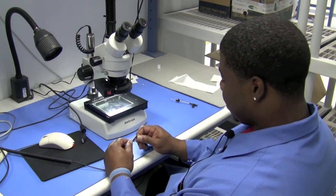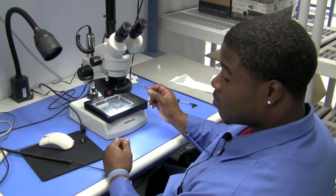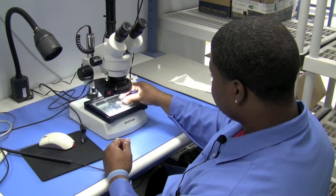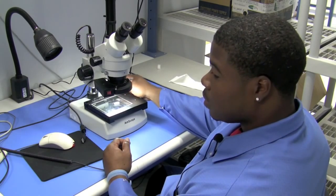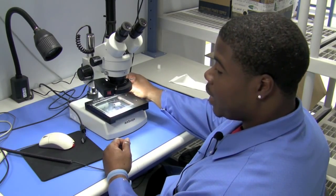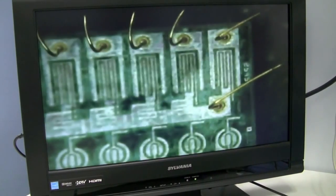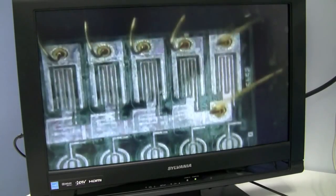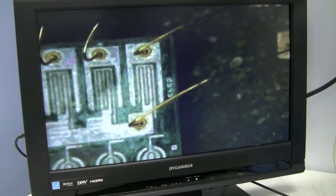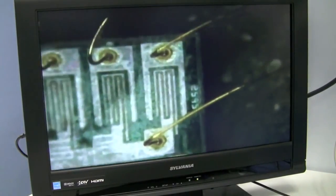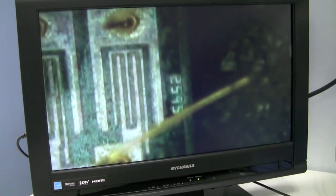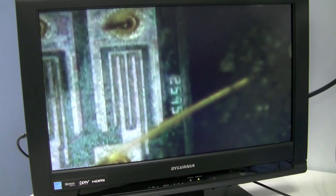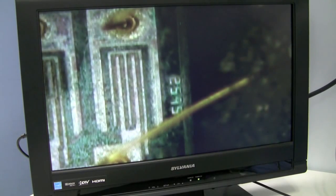After we've completed our decapsulation process, we bring the part over to our microscope station. We place it on the tray on the microscope, locate the die on the part, and at this point we search for any part marking information on the die that we can verify matches the exterior part marking—logos, part numbers, and things of that nature.